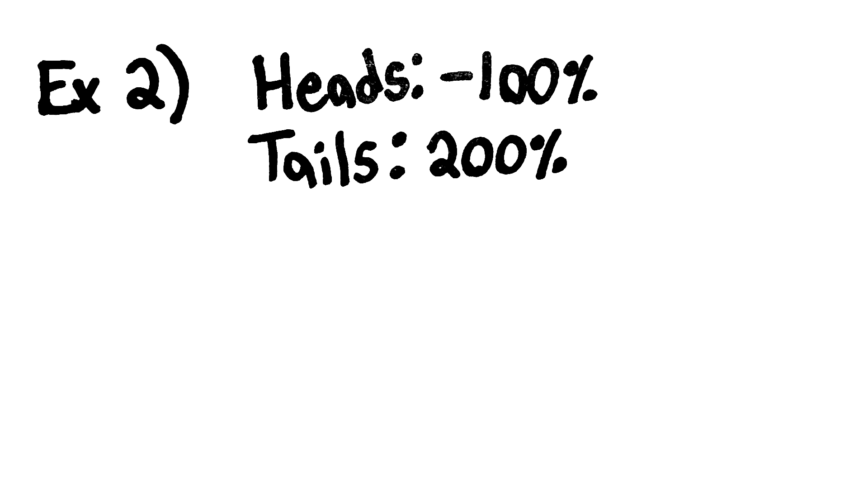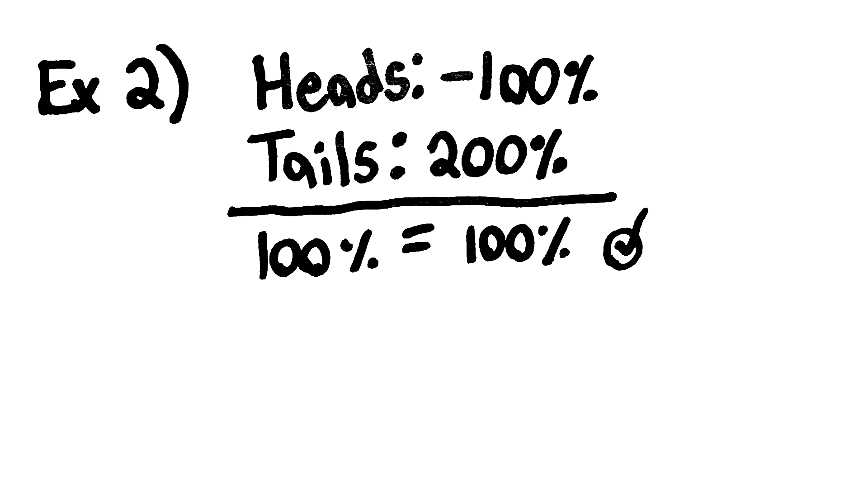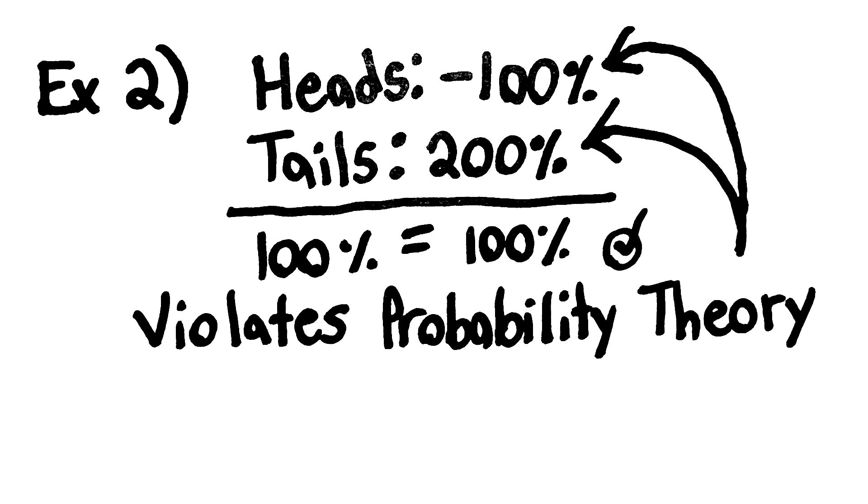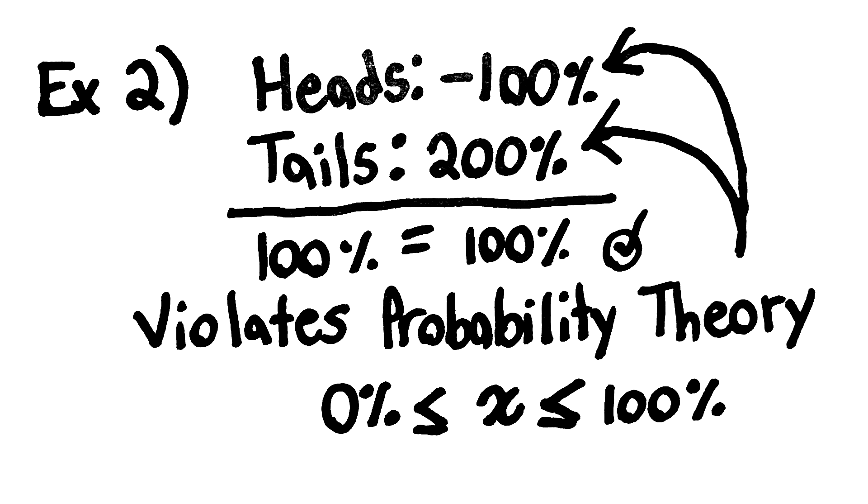There is a minus 100% chance that the coin will land on heads, and a 200% chance that this coin will land on tails. Okay, so this technically does add up to 100%, but there's one more rule I haven't mentioned. Nothing can have a negative probability. All probabilities need to be between 0 and 100%, so this scenario also violates probability theory.